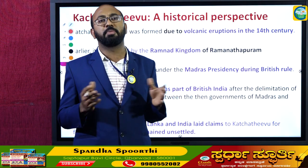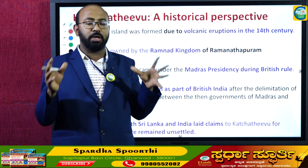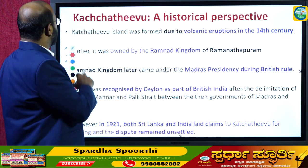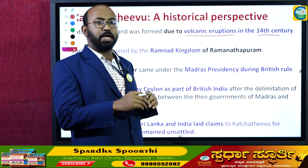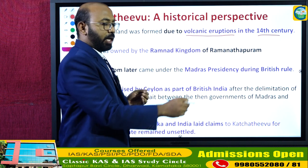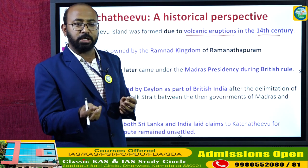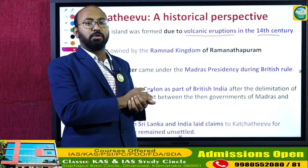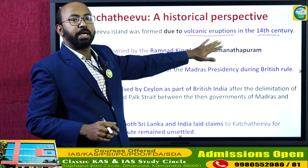Looking at the historical perspective, the Kachitivu Island was formed due to volcanic eruptions in the 14th century. For reference, islands located in the Bay of Bengal — like the Andaman and Nicobar Islands — are volcanic in origin. The islands on the western part of the Indian Peninsula, the Lakshadweep Islands, are coral in origin. But Kachitivu Island is volcanic, formed in the 14th century.